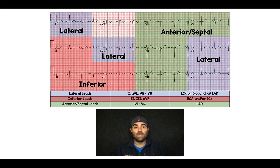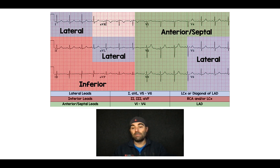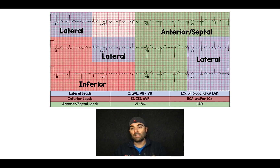Each one of these buckets is going to correlate to a coronary anatomy. Lateral leads are going to be your left circumflex and diagonal off the LAD. Your inferior leads are probably going to be your right coronary artery or maybe even your left circumflex. And your anterior septal leads are going to be your left main or your left anterior descending artery.